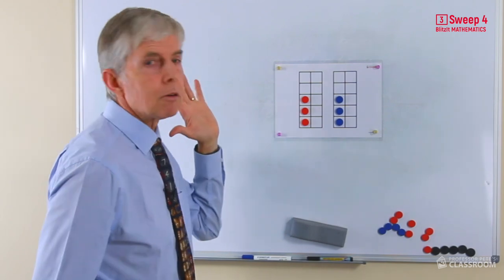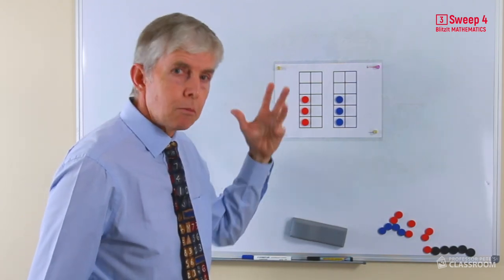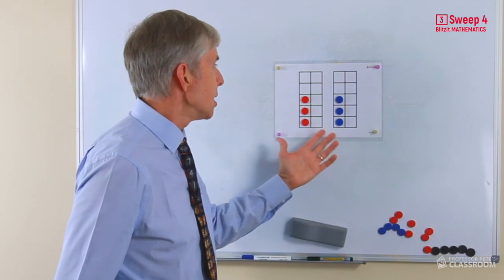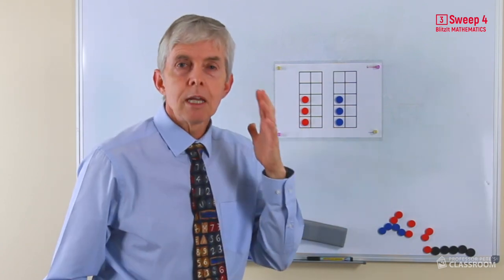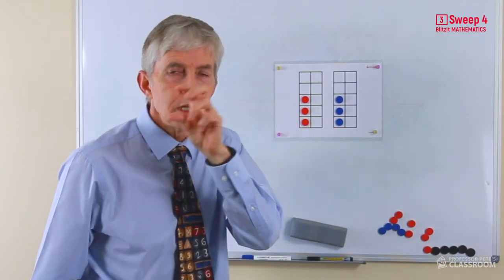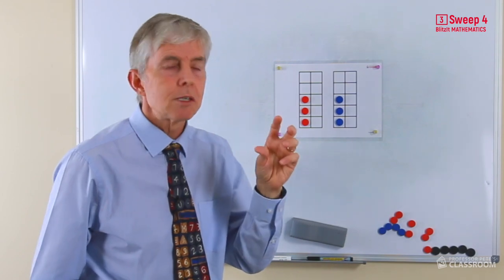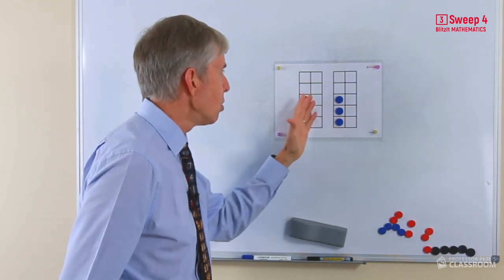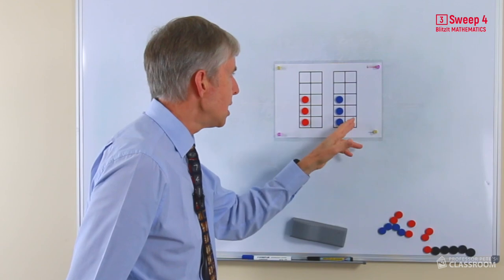Now we want students to visualize this without moving the counters. So the first thing I would say is what's this going to look like? Can you picture it in your mind? If we put all these counters together what will the answer be? We've got three here and three here. Well if we imagine those three over there that would make six.